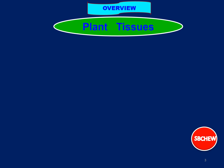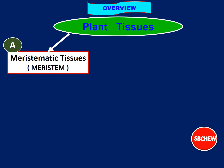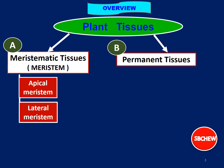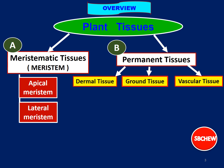In the last video, we have already studied the overview of the types of plant tissues and we have studied about the meristematic tissues, or meristem. Leaving the permanent tissues to be discussed, we have already studied the types of meristematic tissues — the apical meristem and lateral meristem. So in this video, we are going to study about the dermal tissue and the ground tissue. Vascular tissues will be studied in the next video.